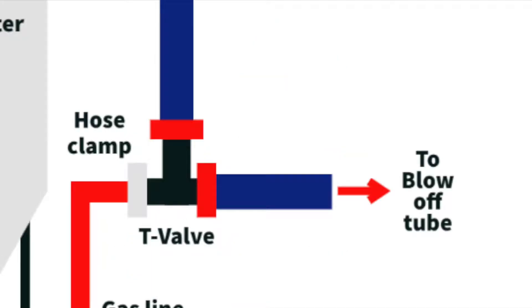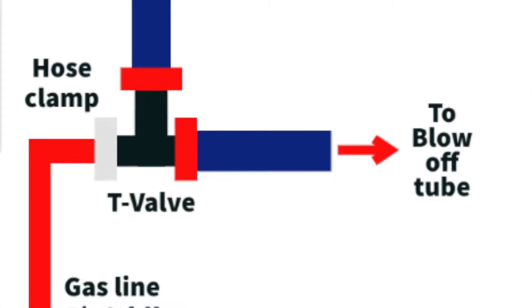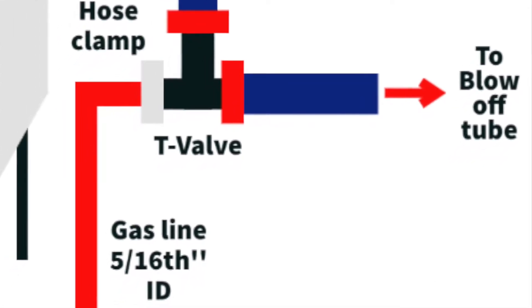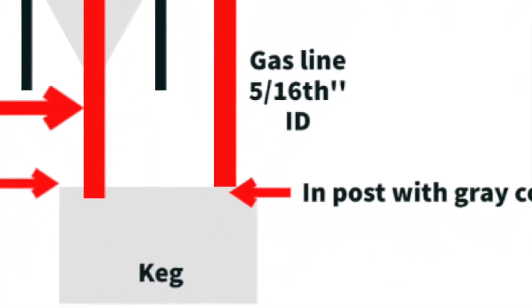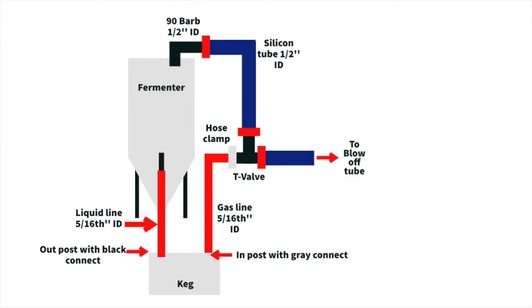From there, if we continue, we'd clamp all those tubes in place, travel from the T-valve to the gas line through a 5/16 inch inner diameter tubing that's connected to the keg with a gray quick connect. On the other side of the keg, it would be connected with a black quick connect to the liquid outpost, and then that would be connected with another tubing that would be similar to keg tubing, which is 5/16, and that would connect to the mini ball valve at the bottom of the fermenter.